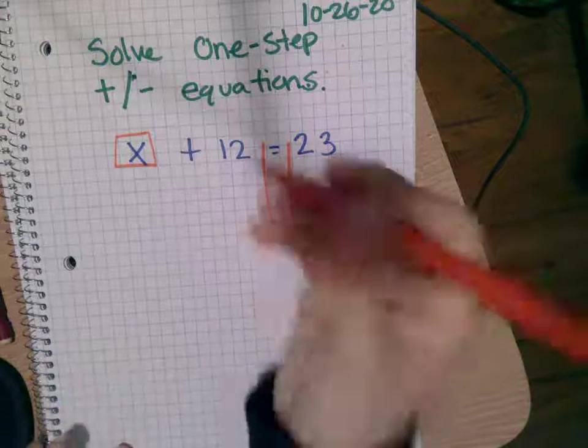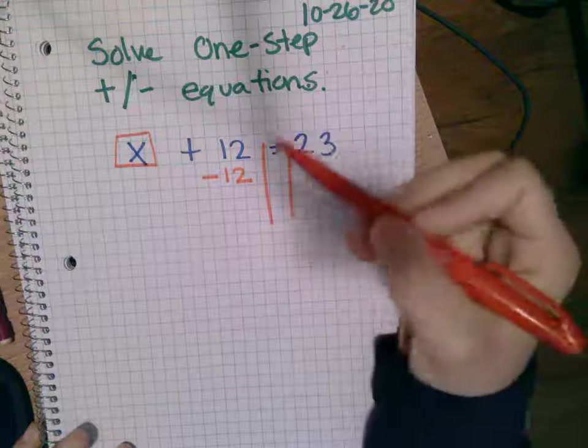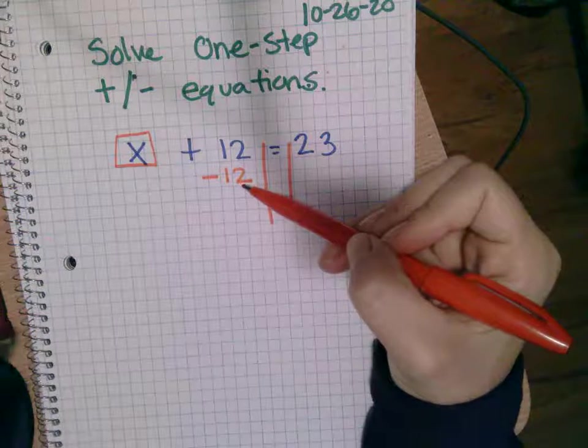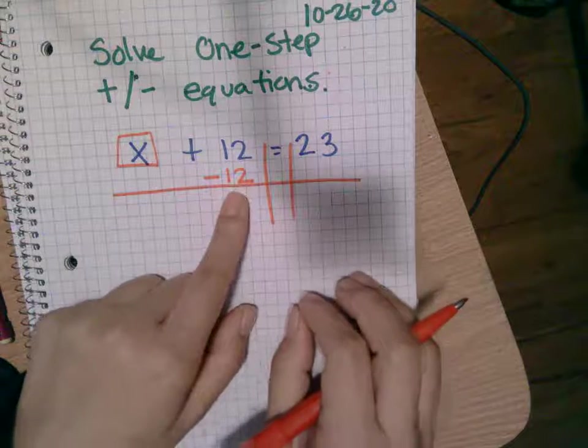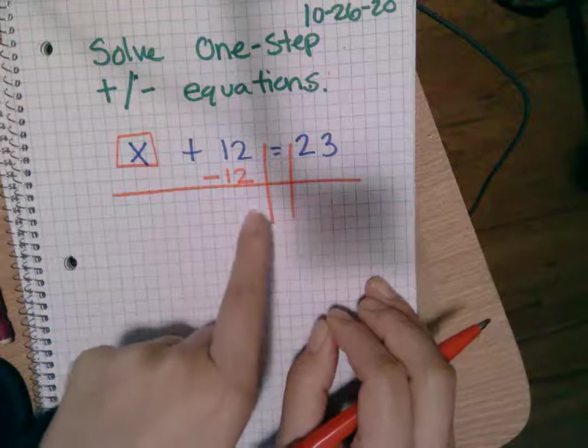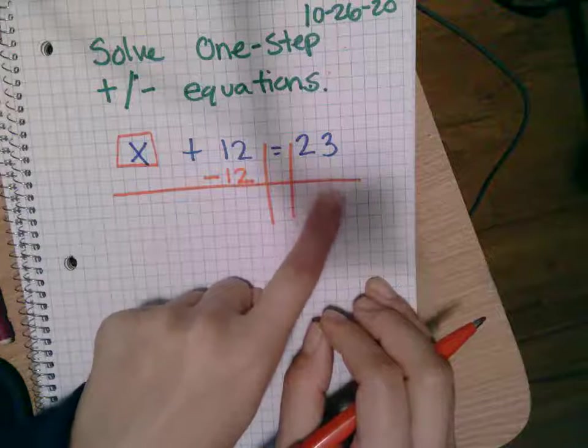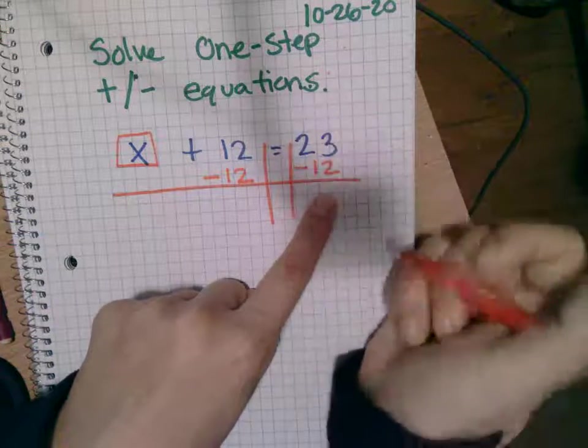Minus 12. So if I write minus 12, what's 12 minus 12? Zero. And that's what I want. Now, because you wrote minus 12 on this side, this side gets kind of jealous and you have to do the same thing. So you have to do the same thing on this side.